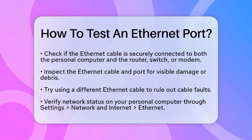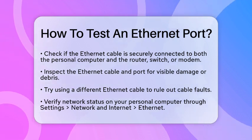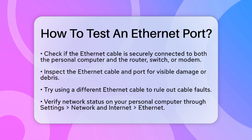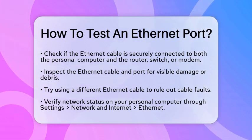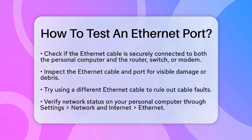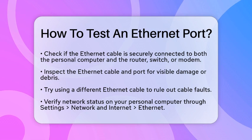Next, check the network status on your personal computer. If you are using a Windows operating system, go to Settings, then Network and Internet, and select Ethernet. You should see a status message indicating whether you are connected or if there is an issue that needs attention.